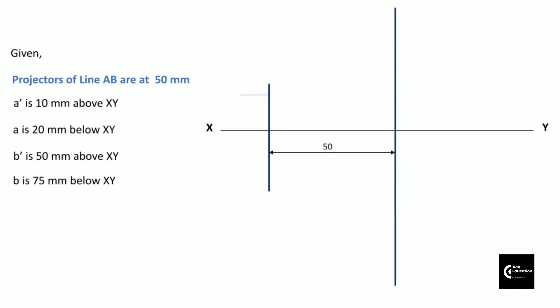Two projector lines at a distance of 50mm. And on the first projector line, we can mark point A dash which is given 10mm above XY line, and point A 20mm below XY line. We get two points A dash and A.